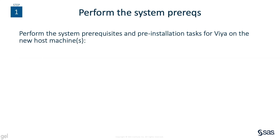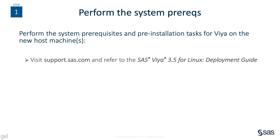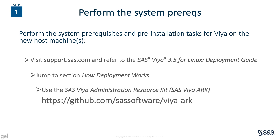Staging the new host machines for the SPREE and ensuring they meet Viya's system requirements is an important step. For details, visit the support.sas.com website and refer to the SAS Viya 3.5 for Linux deployment guide. Jump to the section about how deployment works and look for the reference to the SAS Viya Administration Resource Kit, what we call the Viya Arc. The Viya Arc provides automation to address most of the pre-installation tasks needed to ready a machine for Viya software, and the direct link to the Viya Arc is included. It's an open source project hosted in GitHub which is maintained by SAS for our customers to use.